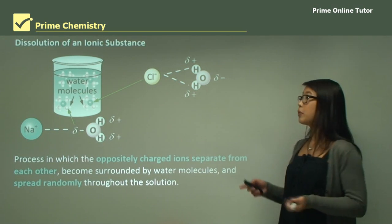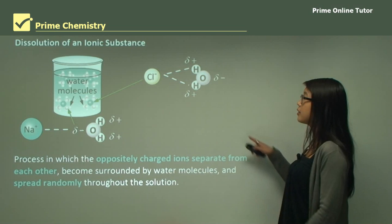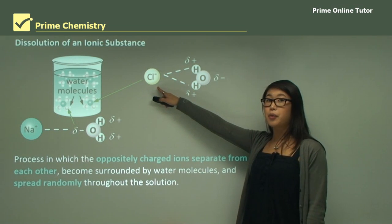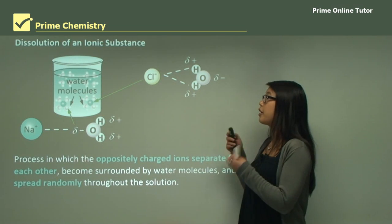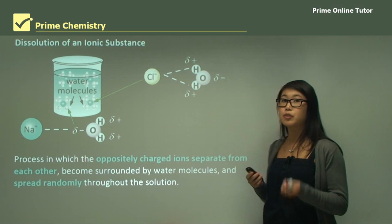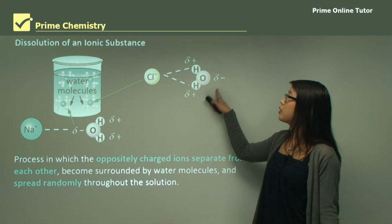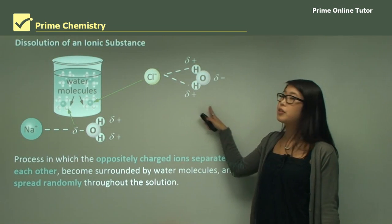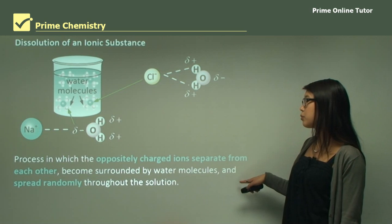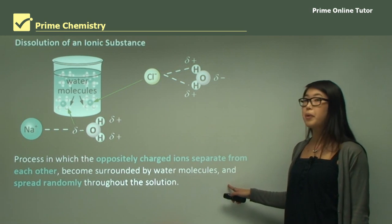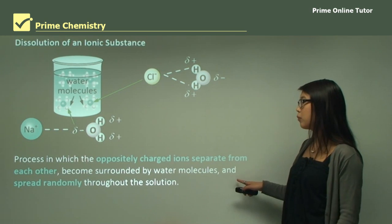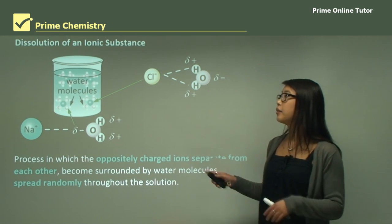The process involves opposite charged ions separating from each other. The chloride ions separate from the sodium in the crystal structure by interacting with water molecules. Each ion becomes surrounded by one or more water molecules and then spreads randomly through the solution.